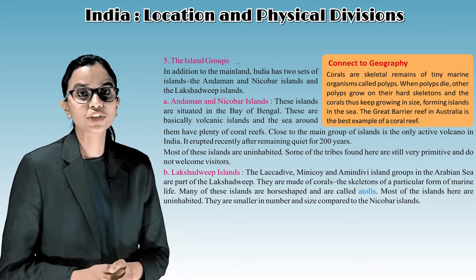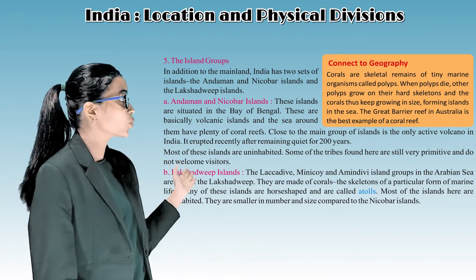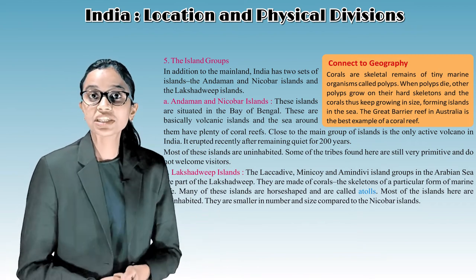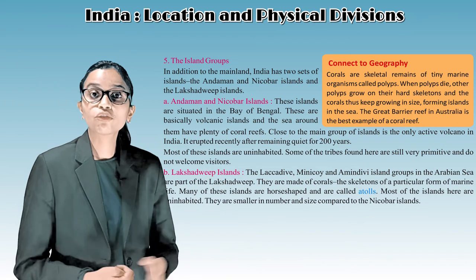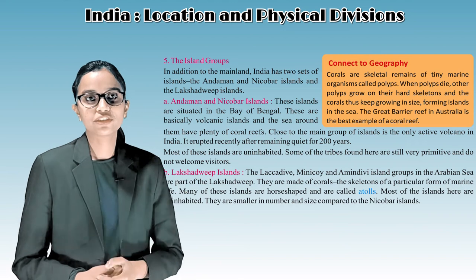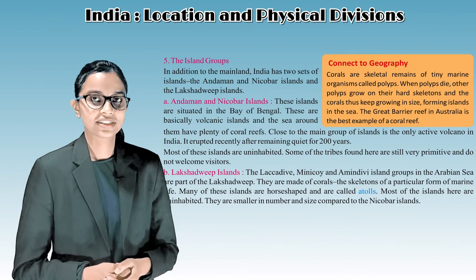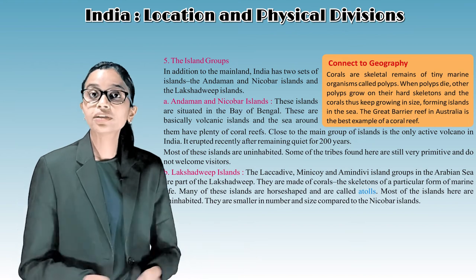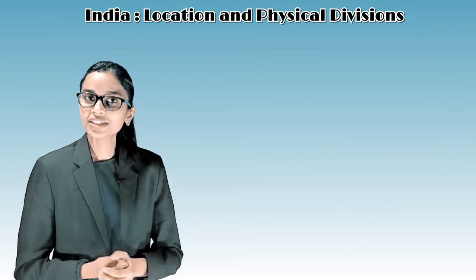The Lakshadweep Islands - the Laccadive, Minicoy, and Amindivi island groups in the Arabian Sea - are part of Lakshadweep. They are made of coral, the skeletons of a particular form of marine life. Many of these islands are horseshoe-shaped and are called atolls. Most of the islands are uninhabited. They are smaller in number and size compared to the Andaman and Nicobar Islands.